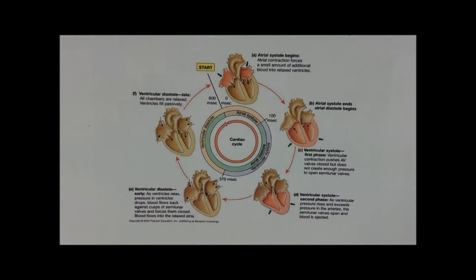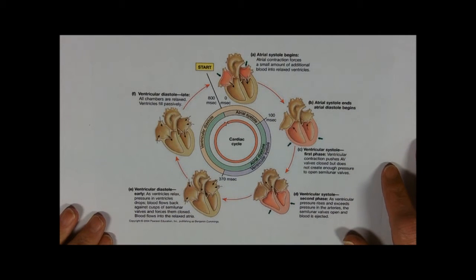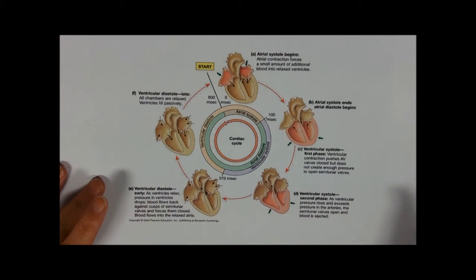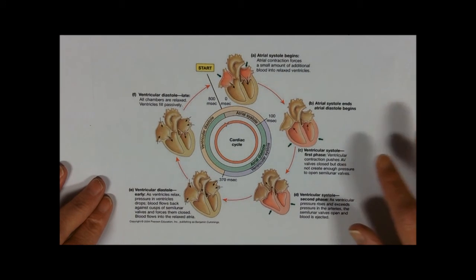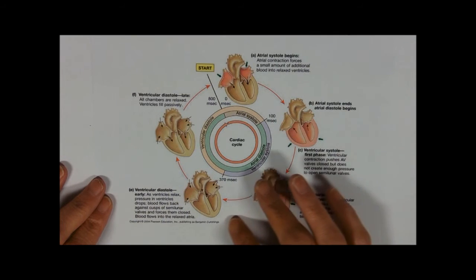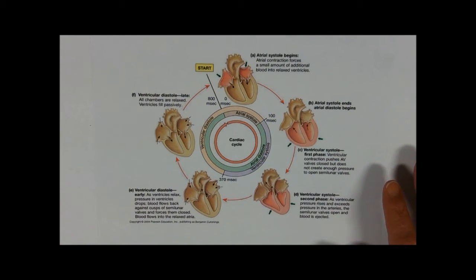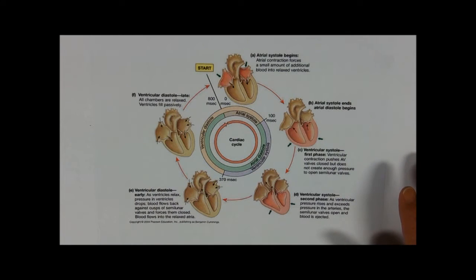Welcome to the cardiac cycle. As you can see, it's a cycle so there is no real start and end. However, conventionally we start the cardiac cycle — most of the graphs and diagrams you see will start with atrial systole, go through to ventricular systole, and then go to diastole, which is where the heart is relaxed.